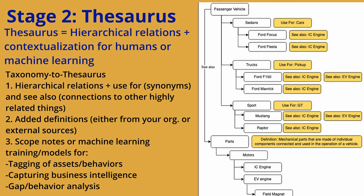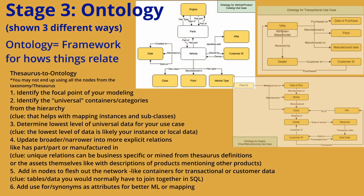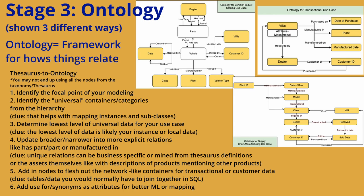Other things represented in a thesaurus are definitions. Sometimes you will also see scope notes, and that's for human or computer-automated tagging of specific assets or behaviors. If you're looking at a manufacturing plant, it's understanding how these things are contextualized in your specific use case and your specific company. The jump from a taxonomy to a thesaurus is not as large as the jump from a thesaurus to an ontology or a knowledge graph.